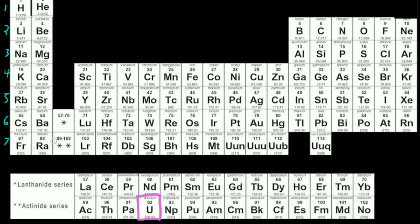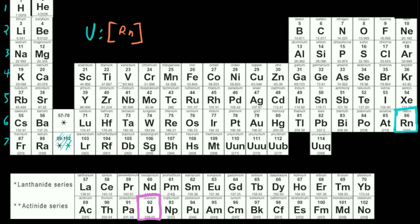Keep in mind that uranium is going to be in some space in this block, in this 89 to 102 range. So what is the nearest previous noble gas to uranium? Well, it's going to be radon. So we can say that uranium is going to have the same noble gas configuration as — in brackets — radon. And if we were going to generalize the rule for figuring out what that electron configuration is, we start out with our 7S electrons.